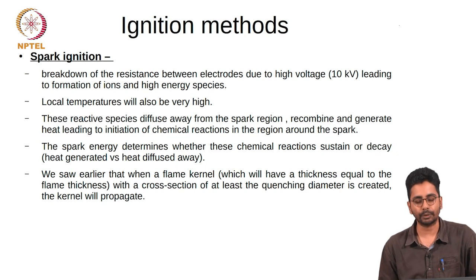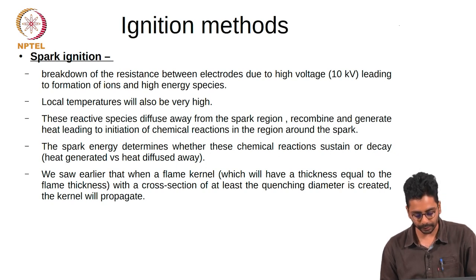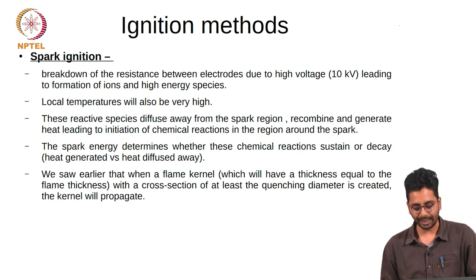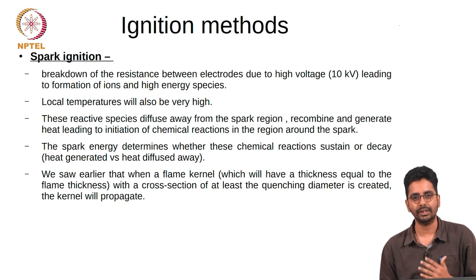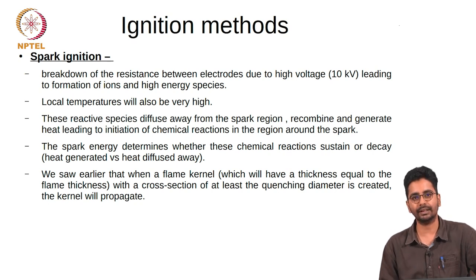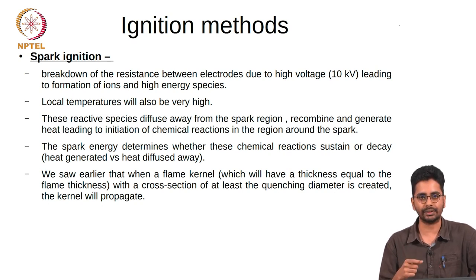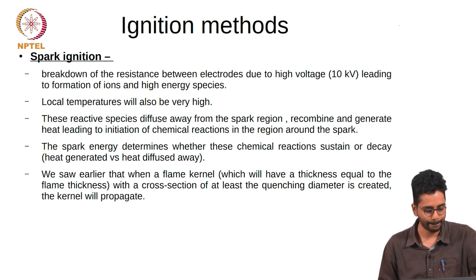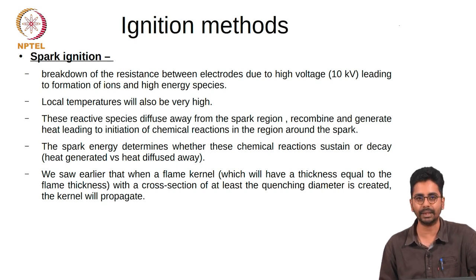A flame kernel — a piece of flame with a thickness equal to the flame thickness and a cross section of at least the quenching diameter — can propagate on its own because the heat release within such a kernel is higher than the heat loss. If we create a flame kernel with a diameter smaller than the quenching distance, losses overcome the heat release and propagation will cease. This same criteria used to derive the quenching distance can also be used to calculate the minimum ignition energy.